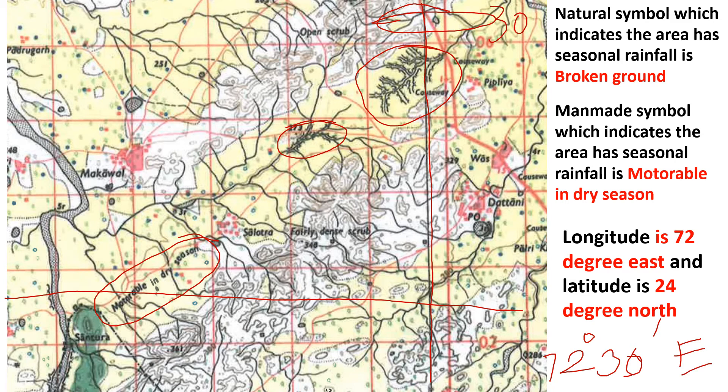Similarly for latitude, if there is a black line like this, you know it is a latitude line. Suppose the minutes written there are 25 minutes, then you will write that it is 24 degrees 25 minutes north latitude.